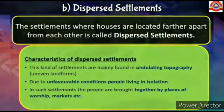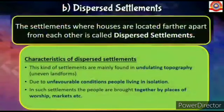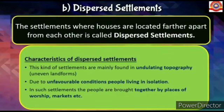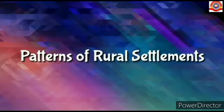Settlements where houses are located further apart from each other are called dispersed settlements. This kind of settlement is mainly found in undulating topography or uneven landforms. Due to unfavorable conditions, people live in isolation. In such settlements, people are brought together by places of worship, markets etc. Settlements that are neither fully nucleated nor dispersed are called semi-clustered settlements.